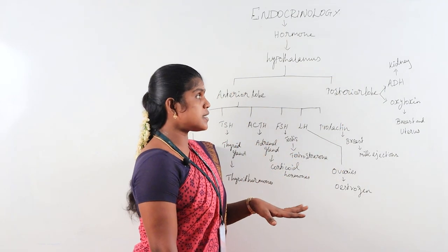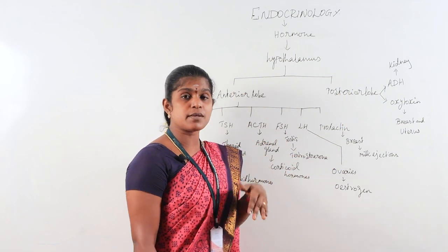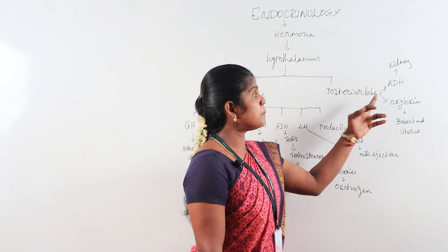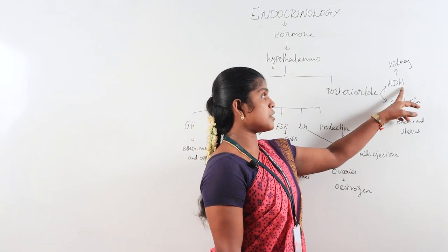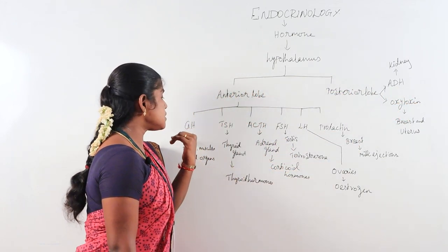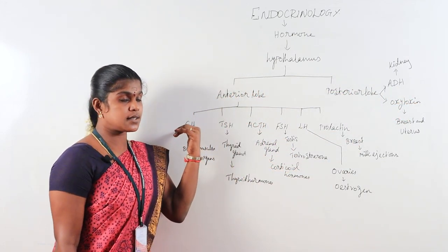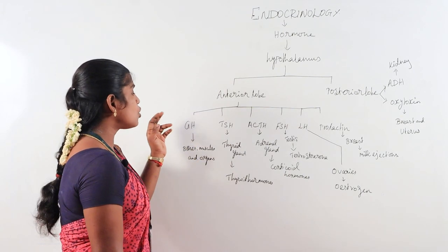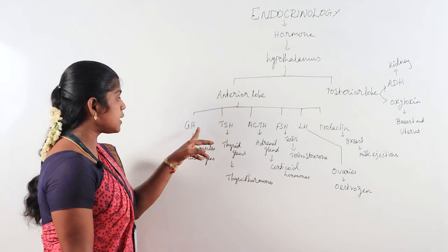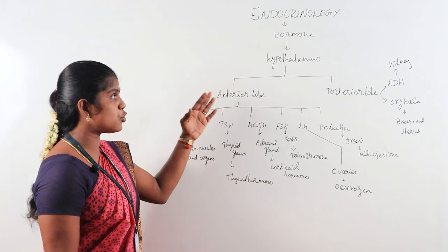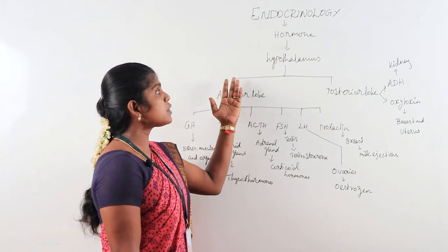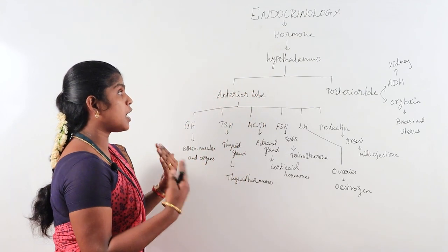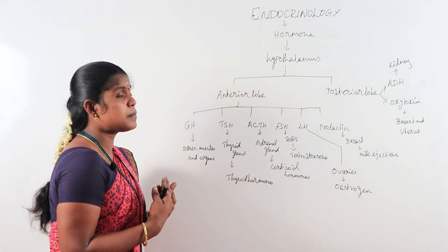The symptoms of diabetes insipidus include polyuria and polydipsia. Growth hormone disorders include hypopituitarism and hyperpituitarism. Hyperpituitarism is an increase in hormone level.